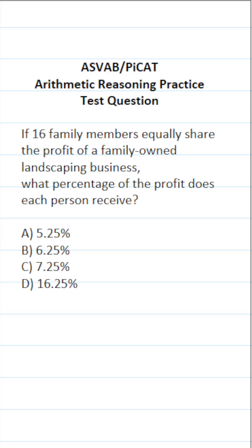For the ASVAB and PICAT, you have to know that you can quickly convert between fractions, decimals, and percents. In this case, if 16 family members equally share the profit of their business, that means each of them receives 1/16th of the profit.